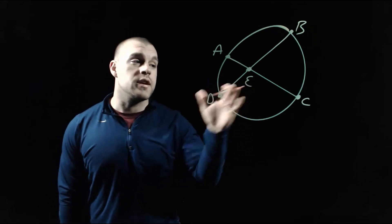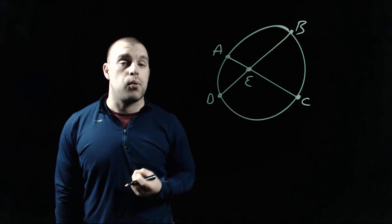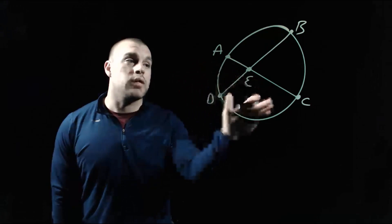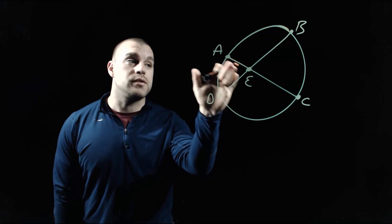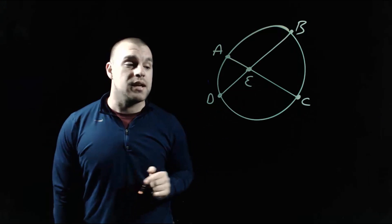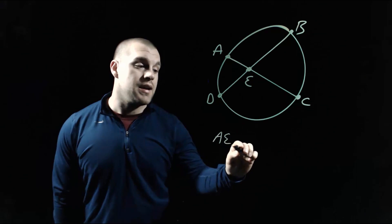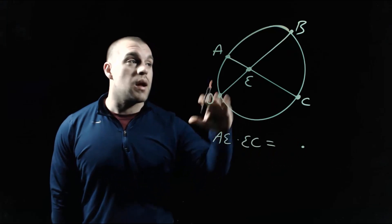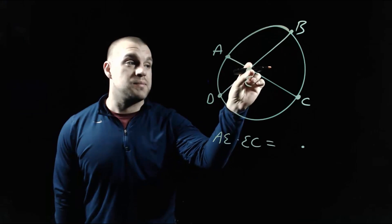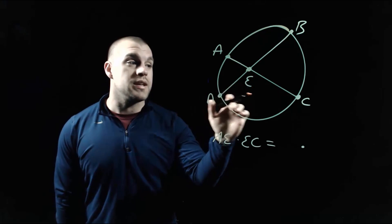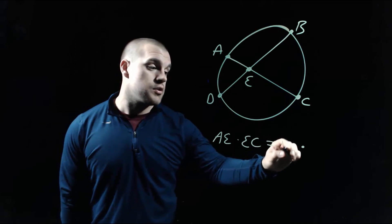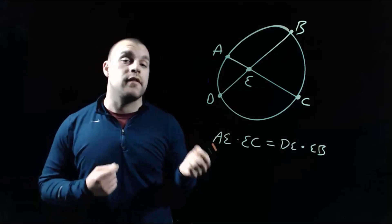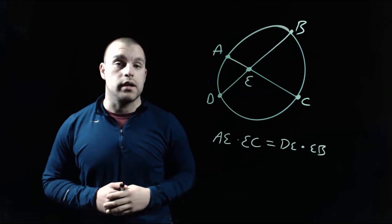Here we've got two chords intersecting at point E. We're going to look at doing the product, which means we're going to be multiplying pieces of chords together. First, let's look at our chord that runs from A to C. Point E splits that into segment AE and segment EC, and if we multiply those together — AE times EC — that has to equal the product of our other chord. DB is split by point E into DE and EB, so we multiply those pieces together: DE times EB. We take the pieces of our chords, multiply them together, and they have to equal each other.